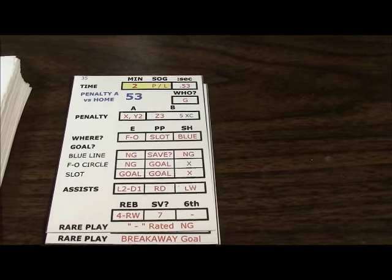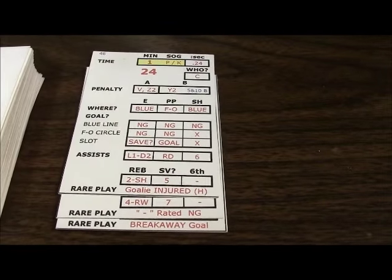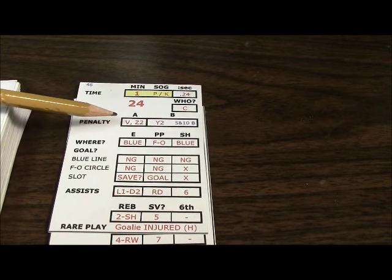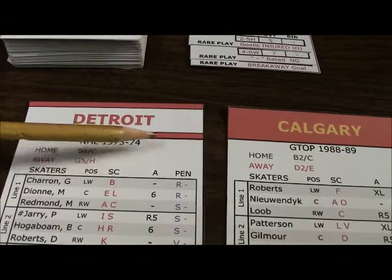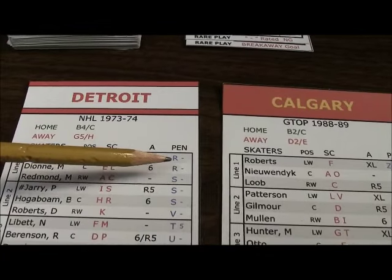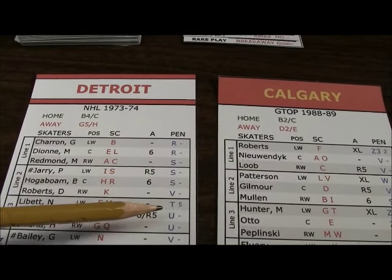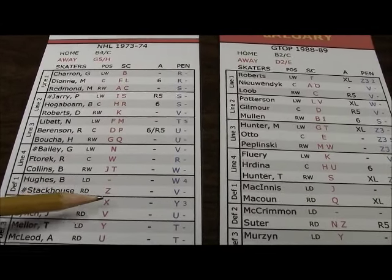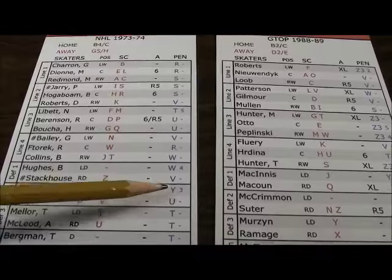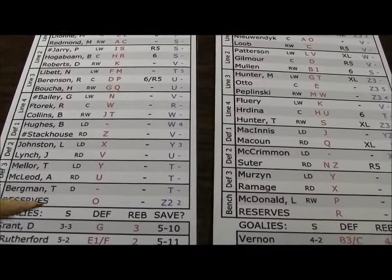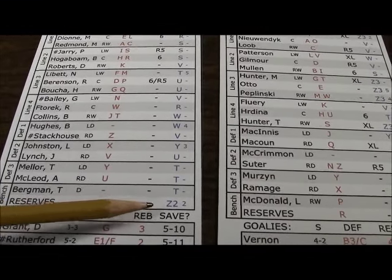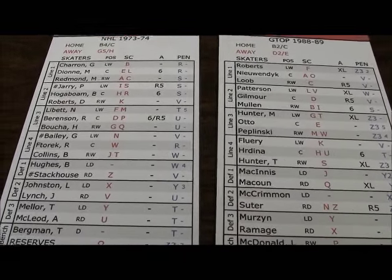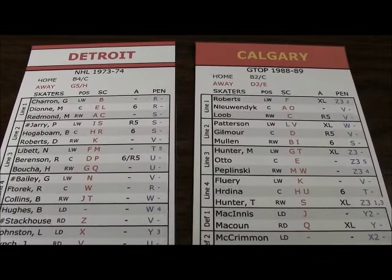Let's assume a different reading had come up — say V and Z2 for Detroit's possible penalty. We check the roster in the penalty column. Here's Doug Roberts, Garnett Bailey, and Ron Stackhouse — all have the V grade. And down at the bottom we see that somebody on the reserves has the Z2 grade. So there are going to be four minor penalties assessed on this time sequence.